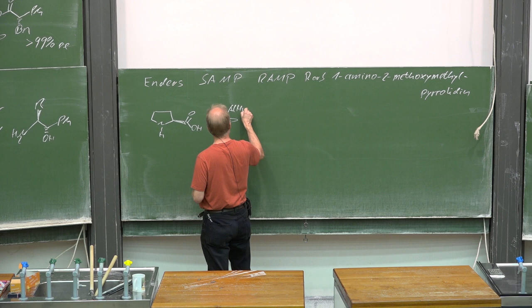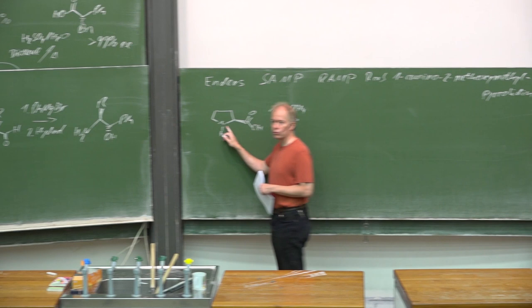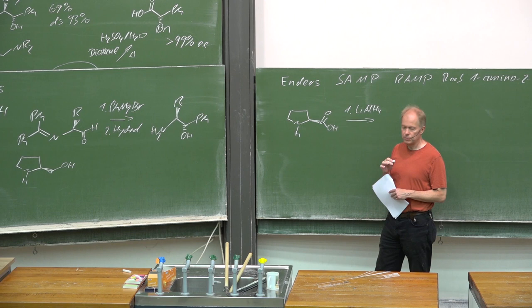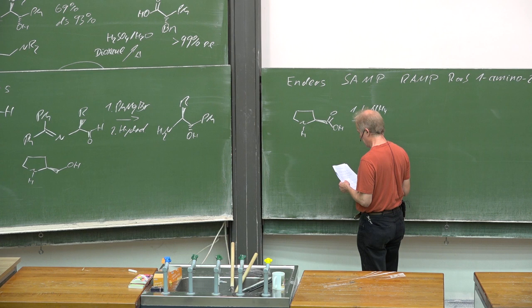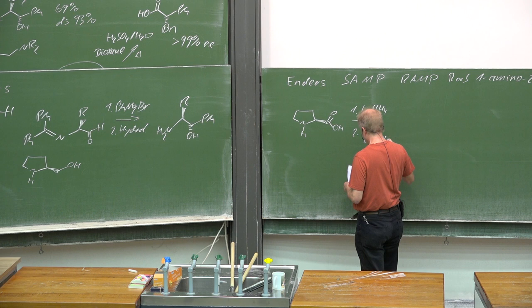Then, for an O-alkylation here, you have to protect the more nucleophilic secondary amine first, and you can do that by an amide formation with formic acid methyl ester.